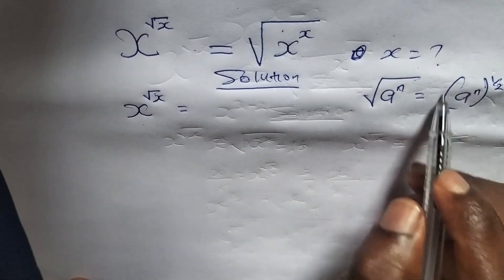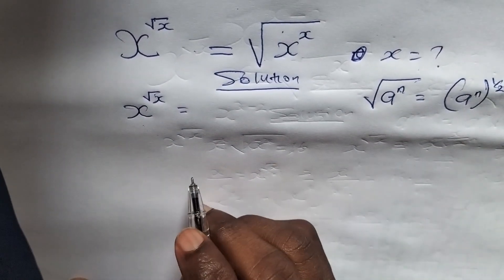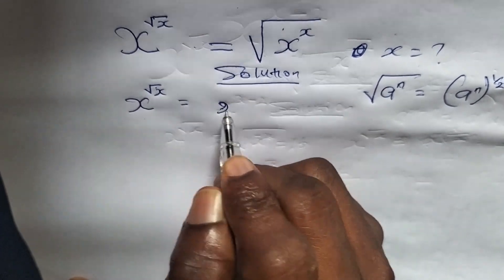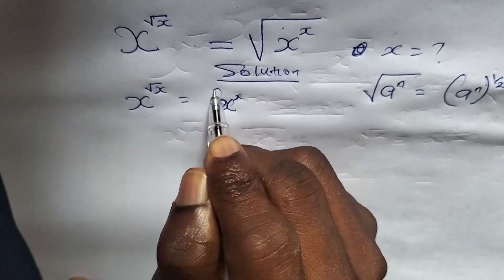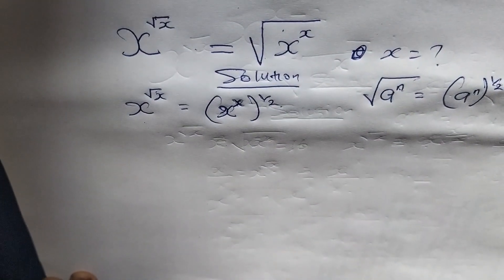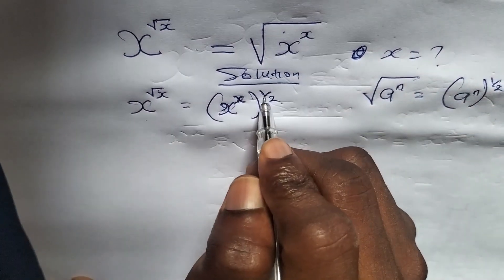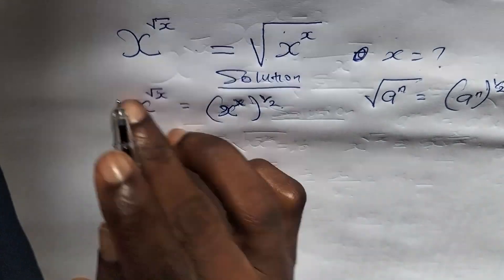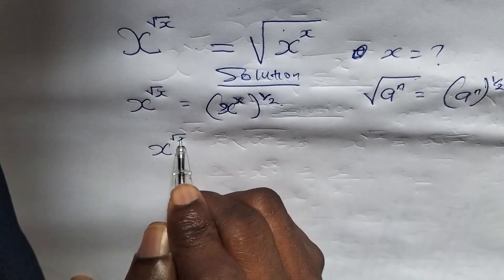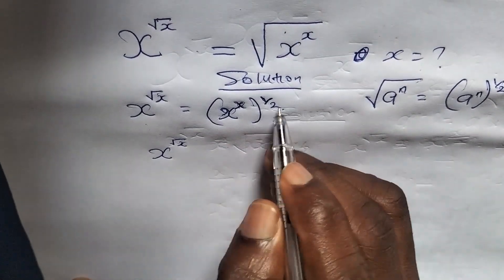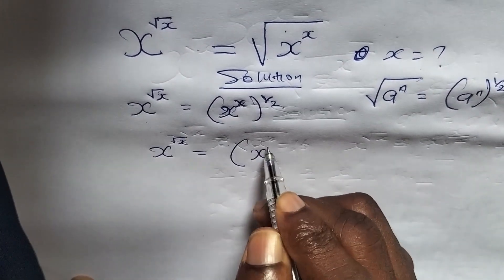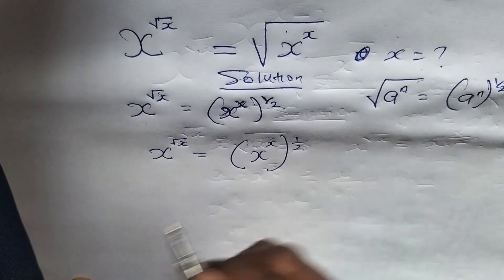So this root is actually affecting both of them. If we apply this rule here, we are going to have x to the power of x, open bracket close bracket, to the power of 1 over 2. So this is what we are now having — we can write this to be x to the root of x equals open bracket x to the power of x close bracket to the power of 1 over 2.